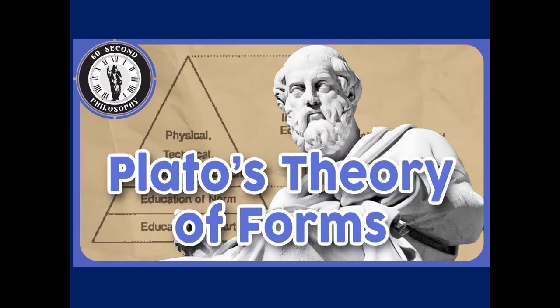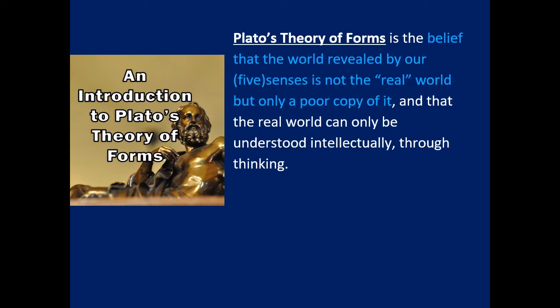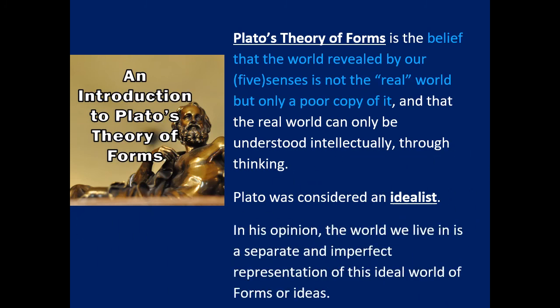Plato's theory of forms — one of his more famous theories. Plato said that the real world that exists, we don't actually see it. Our five senses take in the real world, but all we're really taking in is a poor copy of it. He said there exists an ideal for everything that exists — instead of just lots of chairs, there is an ideal chair. There is a form for an ideal chair that we have in our heads. He said the world is separated from these ideal forms that only exist in our minds, and the real world that we see.